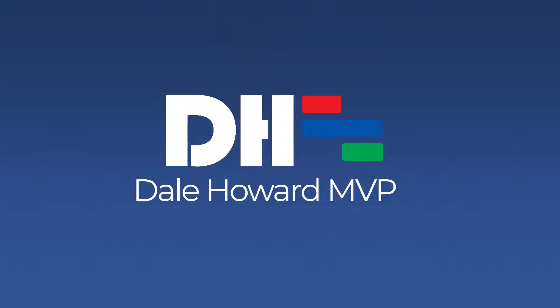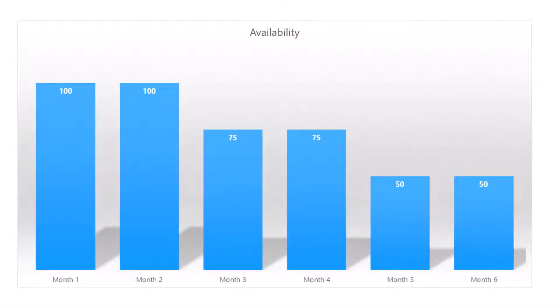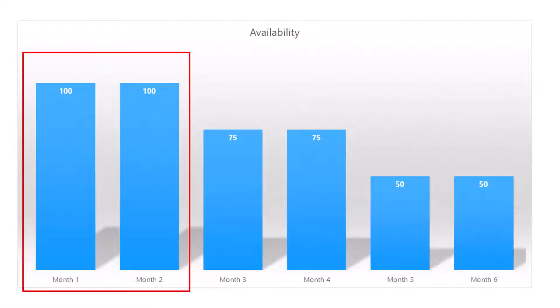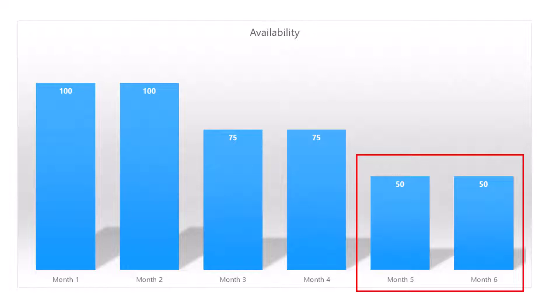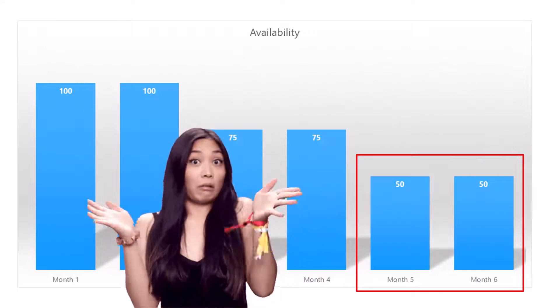In this video, I'll show you how to set up changes to resource availability over time in Microsoft Project. Suppose that you have a team member who's available to work full-time for the first two months of the project, three-quarter time for the next two months, and only half-time for the last two months of the project. How would you set that up? No problem — I'm going to show you. Let's get started.